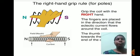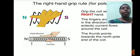Next, the right-hand grip rule: Grip the coil with the right hand. The fingers are placed in the direction that the electric current flows around the coil. The thumb points towards the north pole end of the coil.